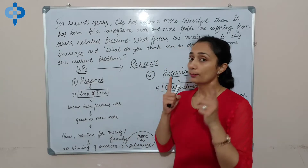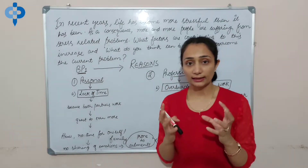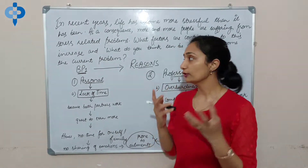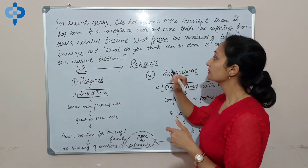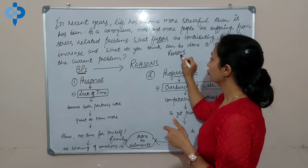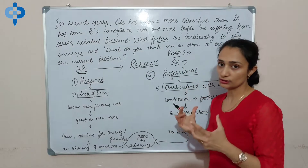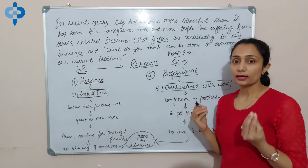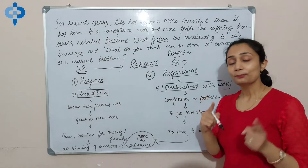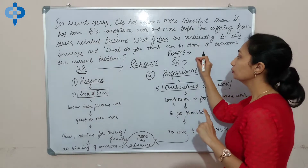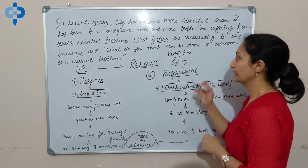Now the second part of brainstorming is: you need to extract the main ideas — what the question is asking. For example, the question asked: what are the factors, what are the reasons that are increasing stress, and what solutions we need to provide. So once you know that, the second brainstorming step is to clearly write down your main ideas — reasons and solutions.